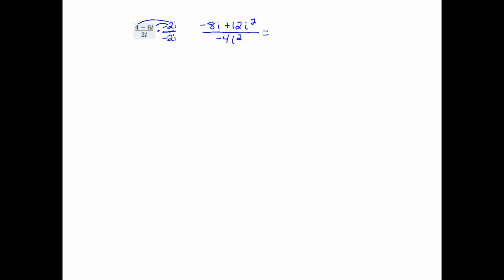Now we can simplify even more. You might remember that i squared equals negative 1, so I'm going to make that substitution. Negative 8i plus 12 times negative 1 — so that 12i squared becomes negative 12. In my denominator, negative 4 times i squared: substituting i squared as negative 1, that gives negative 4 times negative 1, which is positive 4.